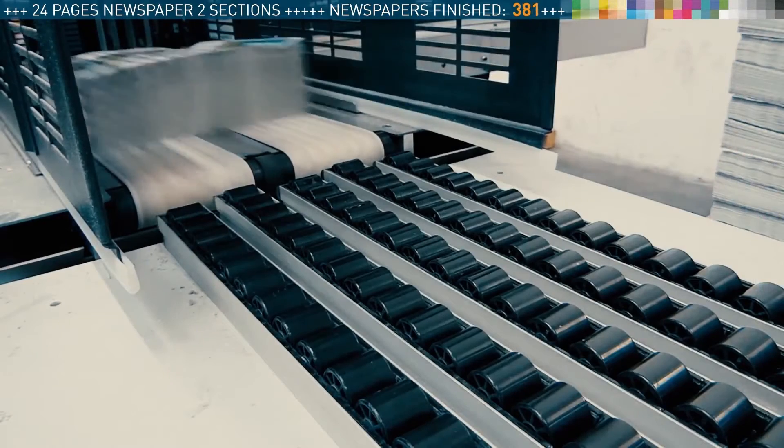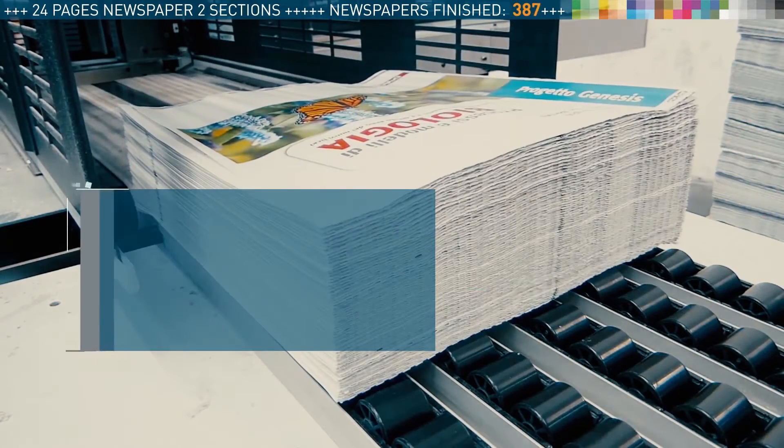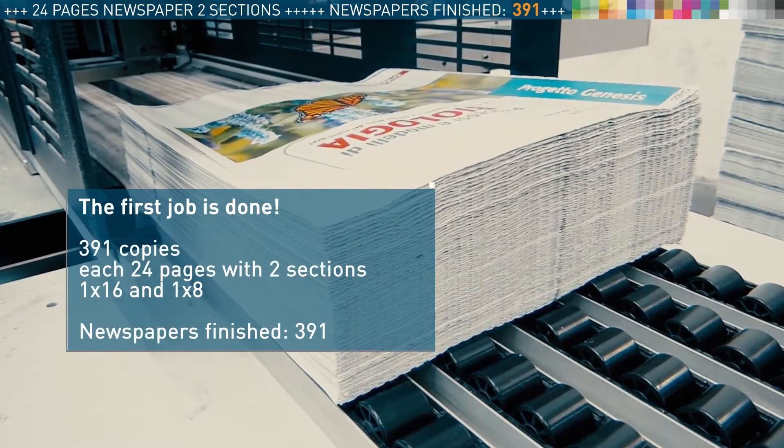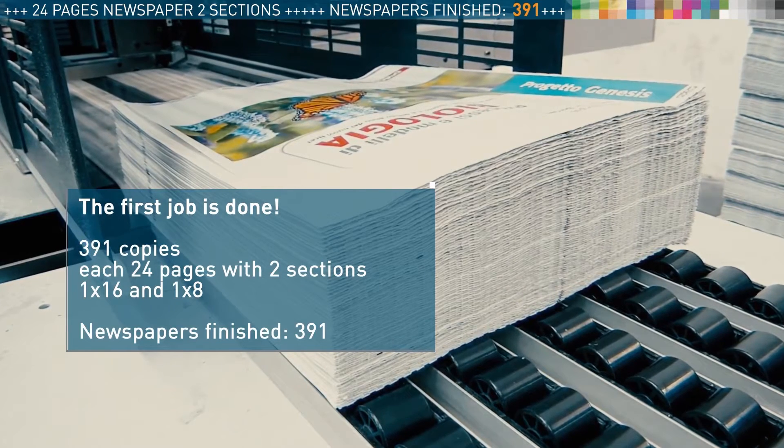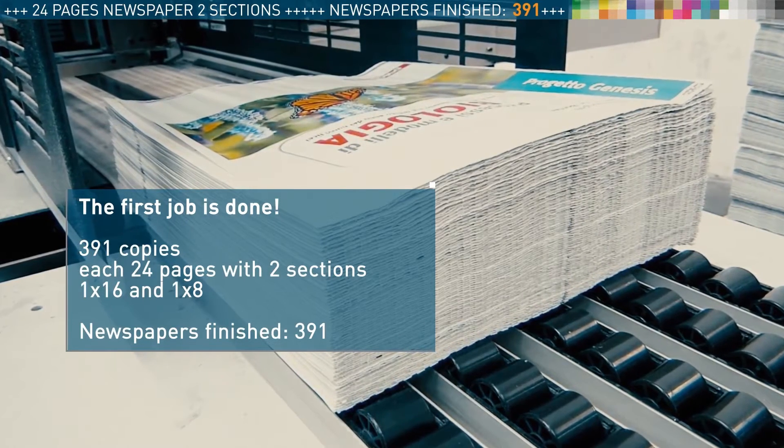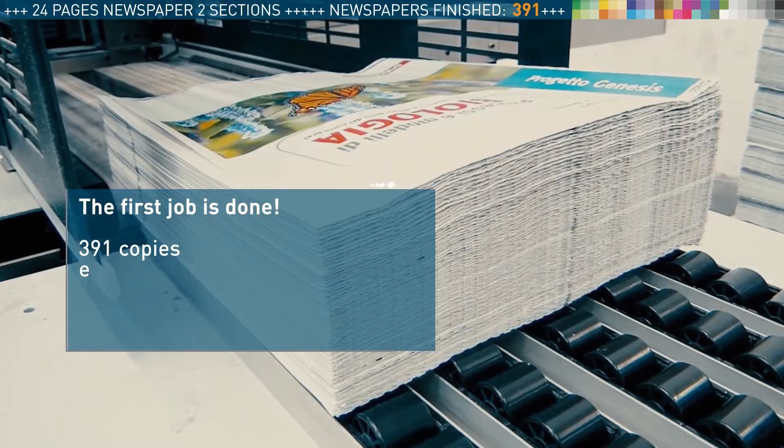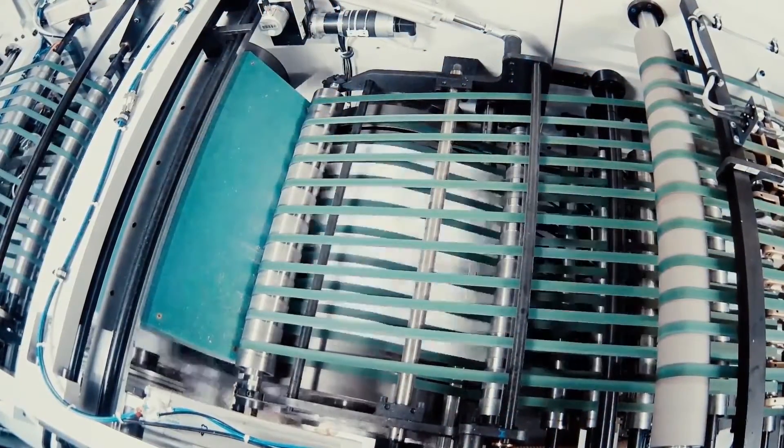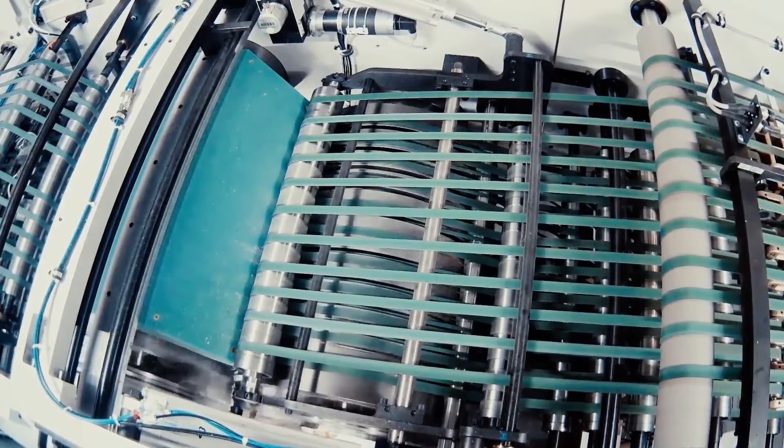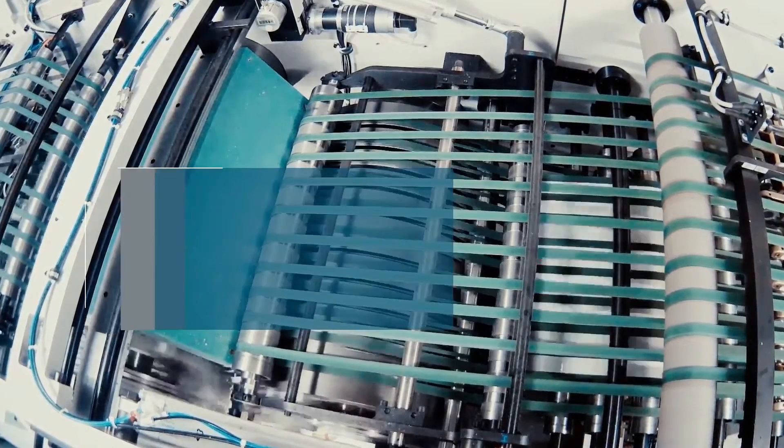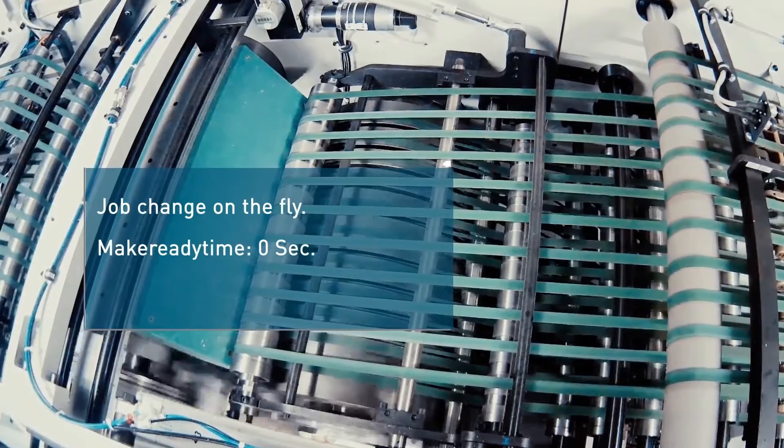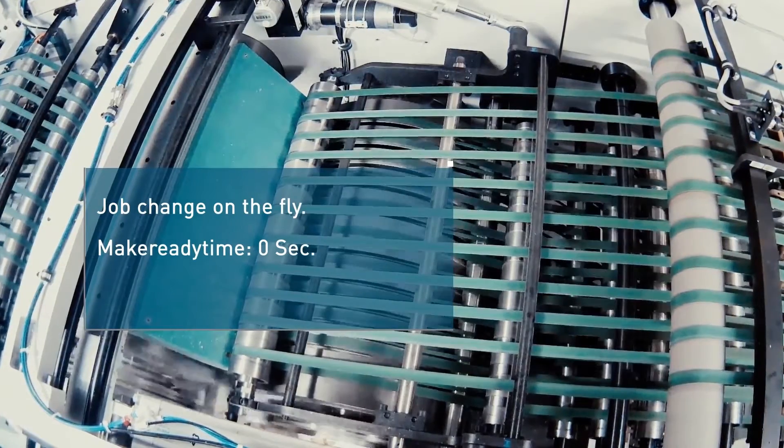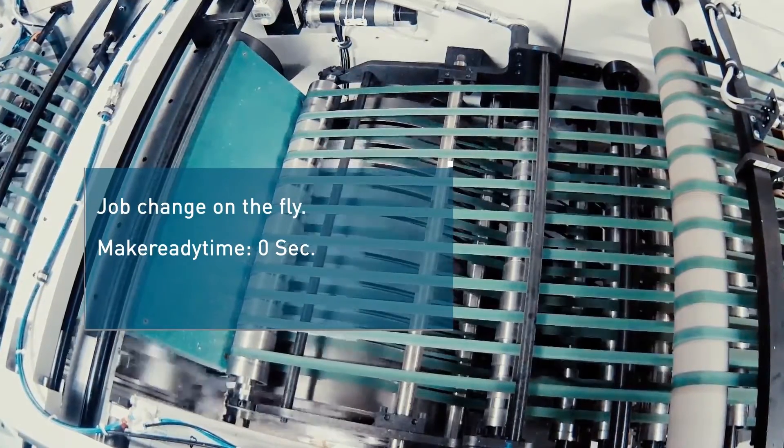Now please pay attention. Our first newspaper job is almost done, 391 papers are finished. We have no time to lose. The job change on the fly is in the queue at full speed, without an operator. We need zero make-ready time. This means we will directly, non-stop start to print a totally different newspaper. We now do the job change.